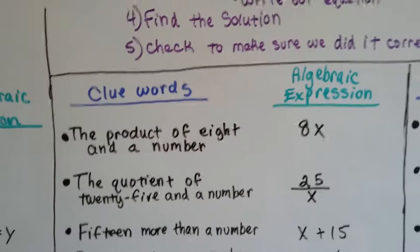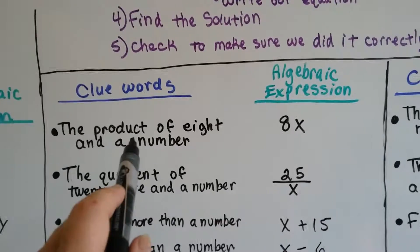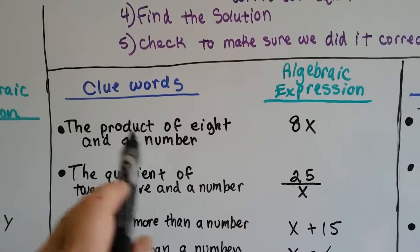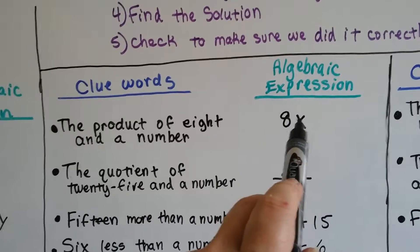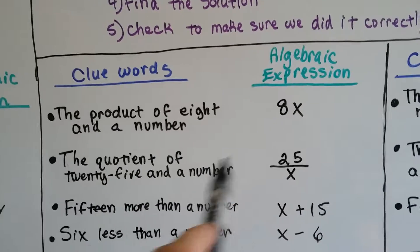If it says the product of 8 and a number, product is the answer to multiplication, so we know it's 8 times something, 8 times a number, 8 times x or y or n.